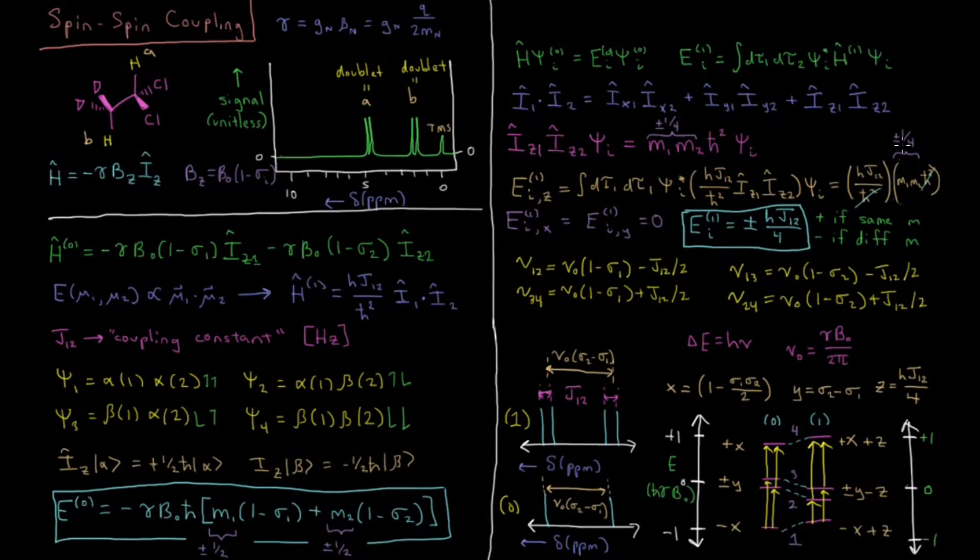So our whole first order energy comes from this z term here, and what we find is it depends on the product of m1 and m2 from the iz operator. So if both of the spins are up or both of the spins are down, we're going to get plus hj12 over 4. And if they have different values, up, down, or down, up, then you're going to get minus hj12 over 4. It's plus if m1 and m2 are the same. It's minus if they're different.